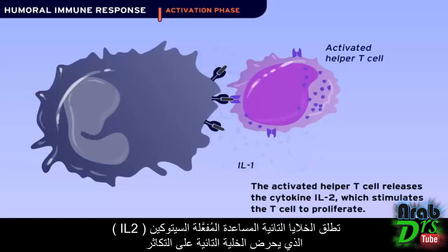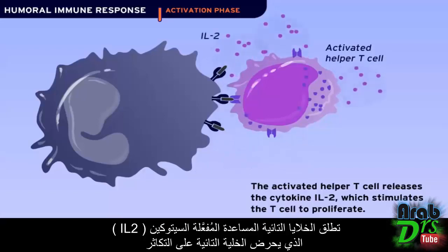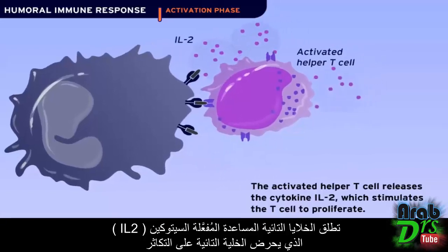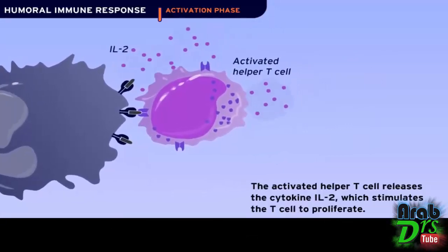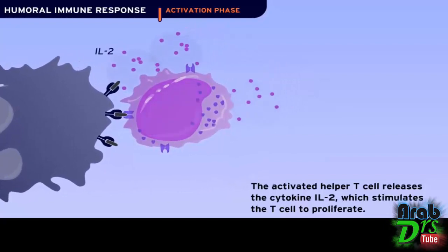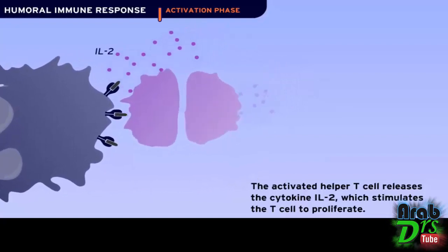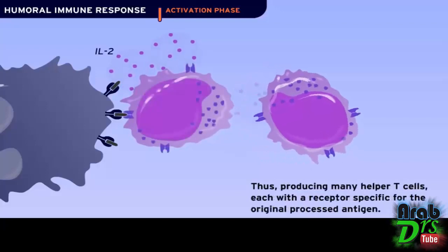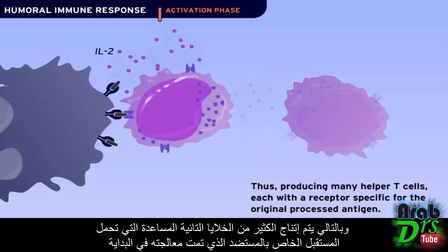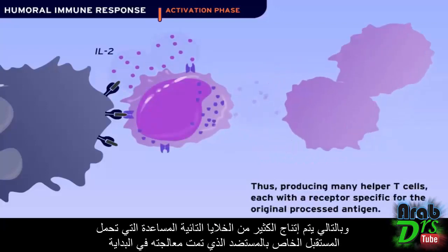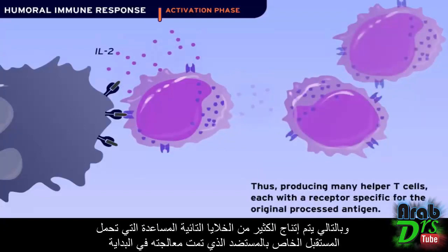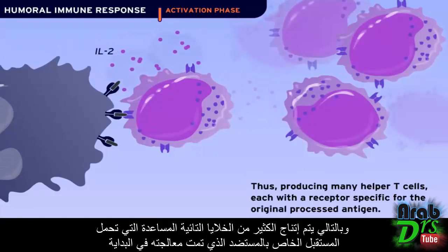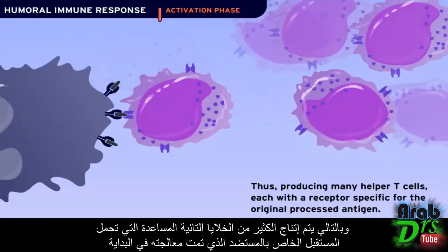The activated helper T cell releases the cytokine IL-2, which stimulates the T cell to proliferate, thus producing many helper T cells, each with a receptor specific for the original processed antigen.